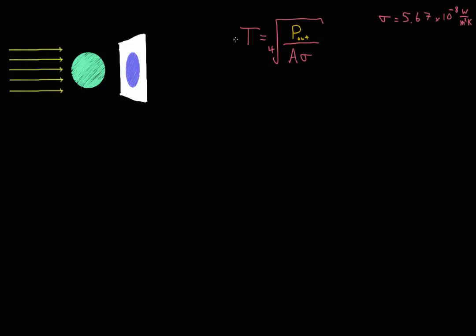In the last video, we took the equation for the power radiated by an ideal black body and rearranged it to solve for temperature. In this video, I want to use that equation to calculate the temperature of the Earth, or what the temperature would be if the Earth did not have an atmosphere. So to do that, we're going to pick apart each of these things and plug it in through the equation. So first of all,